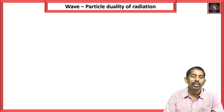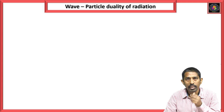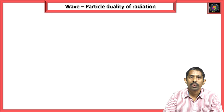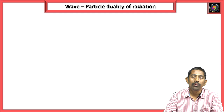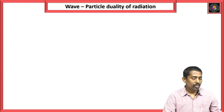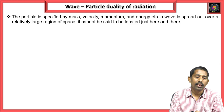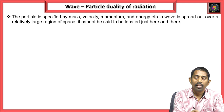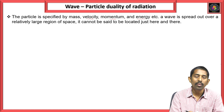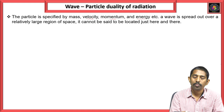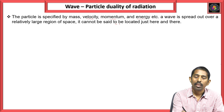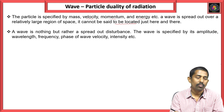So, what exactly is the duality of radiation? A particle is specified by mass, velocity, momentum, and energy — all these parameters give the particle nature. From this particle nature, we cannot say where exactly the particle will be existing; it cannot be said to be located just here or there.